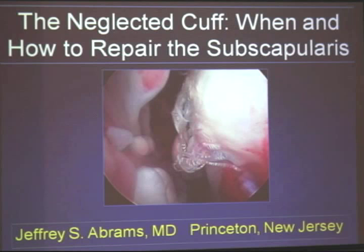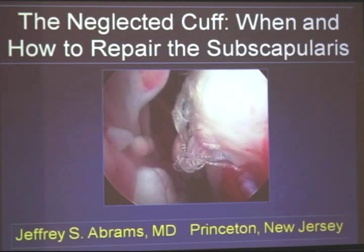If we're interested in doing arthroscopy, even though this is one tendon that you could probably approach through a delto-pectoral split and not actually interfere with the deltoid, there are many times the subscapularis is part of greater pathology. It would be nice to be able to approach this problem arthroscopically as part of the accumulating experience in how to deal with rotator cuff tears with an arthroscope.